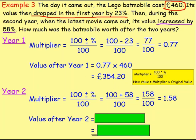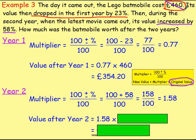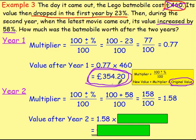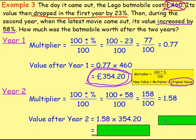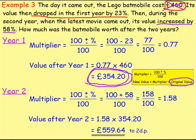For year 2, you take the multiplier — the 1.58 — and multiply it by the original value. Just be careful though: even though I'm saying 'original value,' I'm not going to be using the £460. When I mean original value, I mean the value at the start of this calculation. And the value of the Batmobile right now, at the start of this calculation, is £354.20. So that is what you multiply the multiplier by. If you work that out, you end up getting the Lego Batmobile to be worth £559.64, correct to two decimal places.